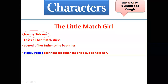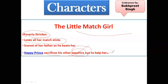There is also the little match girl, who is poverty-stricken. She sells matchsticks and loses all of them by mistake one day. She was scared of her father, who would beat her if she was unable to earn money by selling matchsticks. The Happy Prince, seeing the misery of this little girl, sacrificed his sapphire eye to help her.